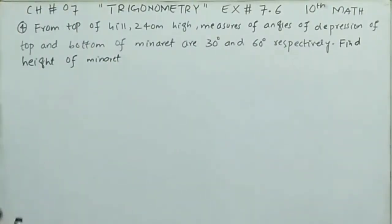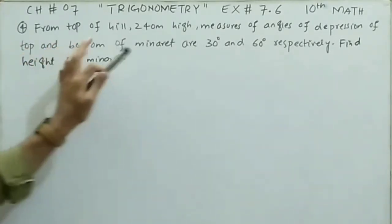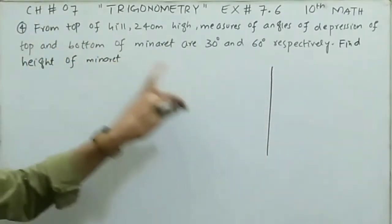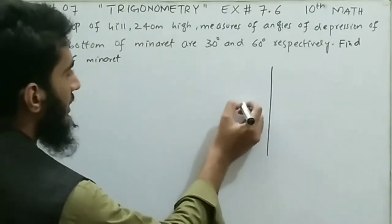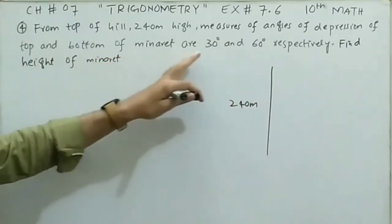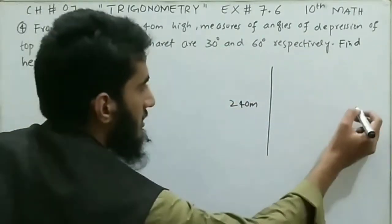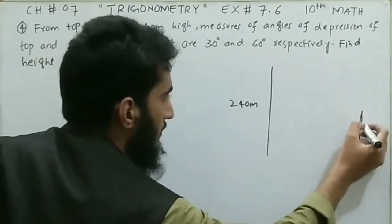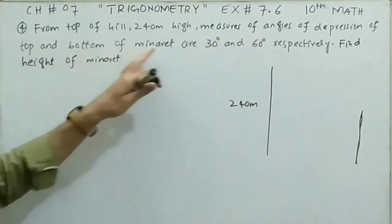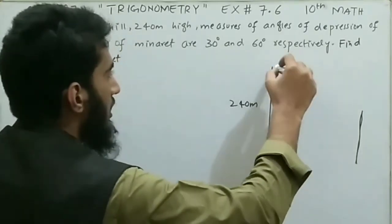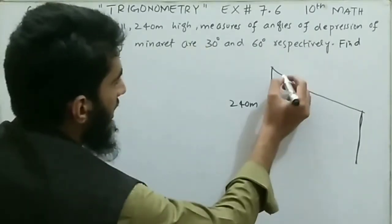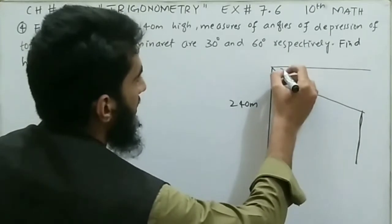Question number 4 is a difficult question — understand the concept carefully. From the top of a hill which is 240 meters high, the measure of the angle of depression of the top and bottom of a minaret are 30 degrees and 60 degrees respectively. A minaret is the tower in a mosque from which the call to prayer is given. So from the top of the hill, the top of the minaret makes 30 degrees and the bottom makes 60 degrees.